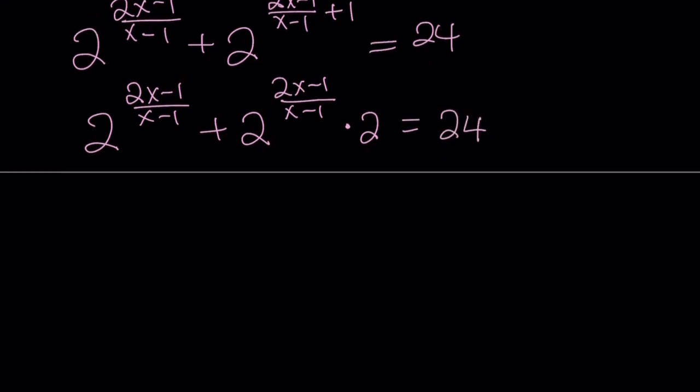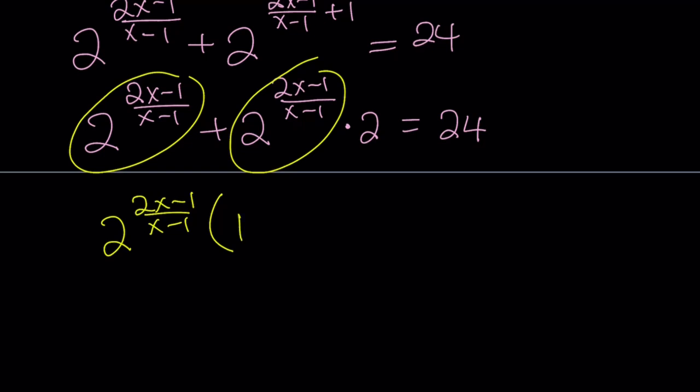Now, since we have a common factor at this point, we can go ahead and take this out. So we have 2 to the power of 2x minus 1 over x minus 1. I know some people are thinking, hey, I can add these because they're like terms. Yes, you can do that too. So if you take out the common factor, you get 1 because there's nothing here. So we can write this as 1 times something. And 1 plus 2. And the whole thing is equal to 24.